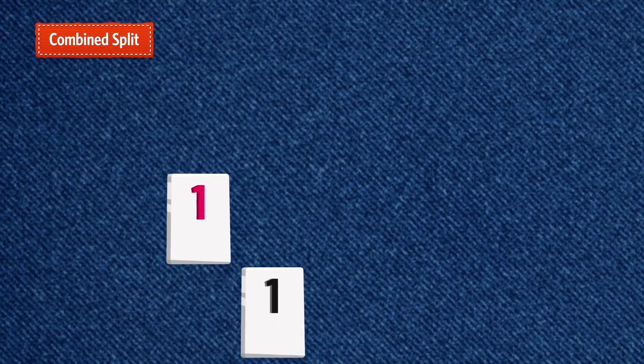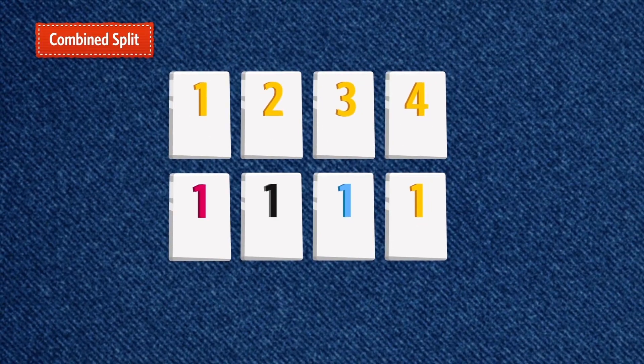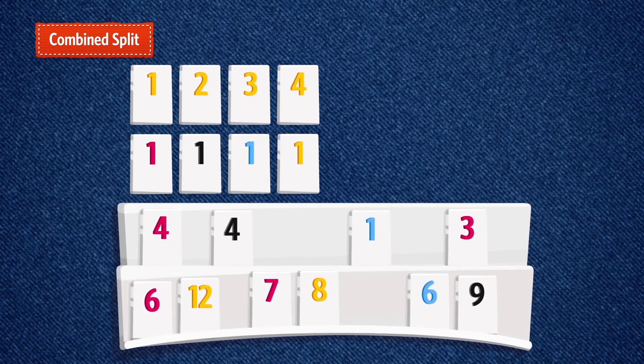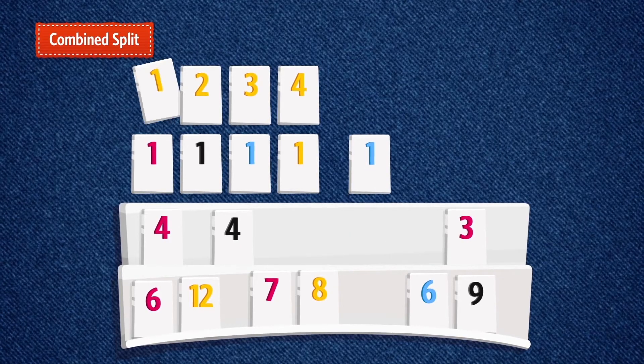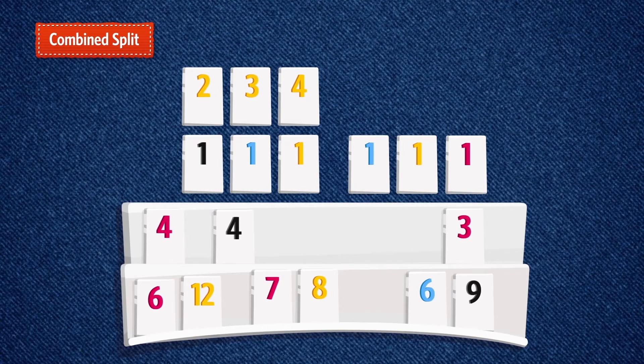Combine split. Take a tile from here, a tile from there and a tile from your rack to form a new set. Take the blue one from your rack, the yellow one from the run and the red one from the group to create a new group of ones.